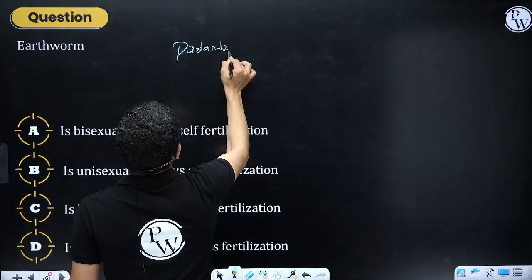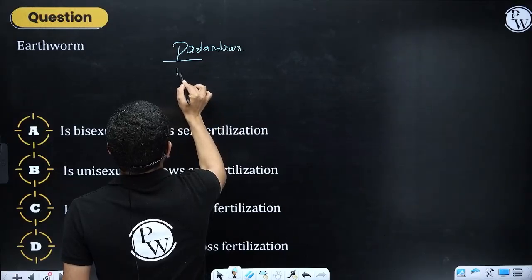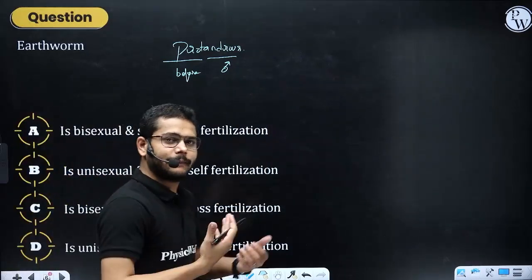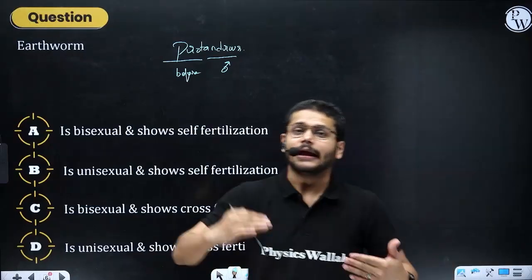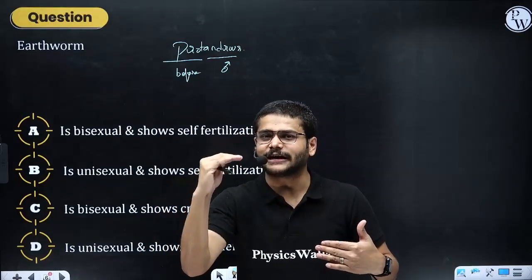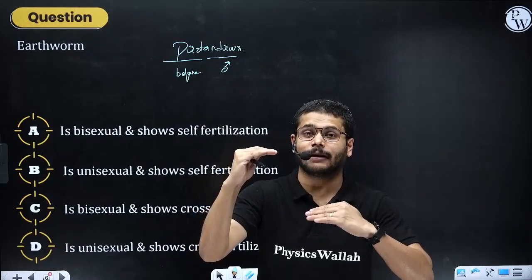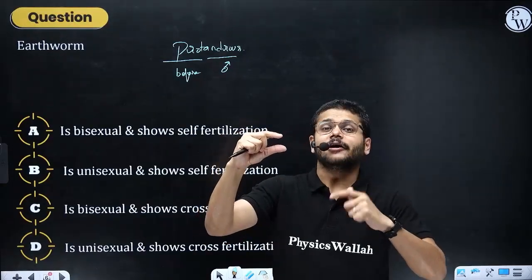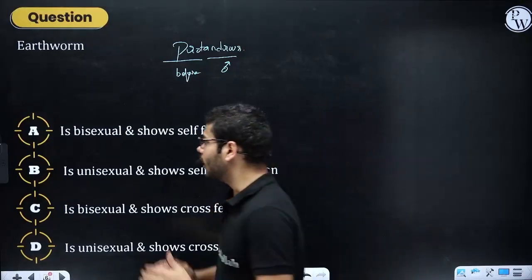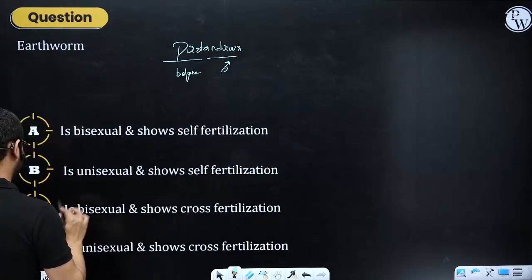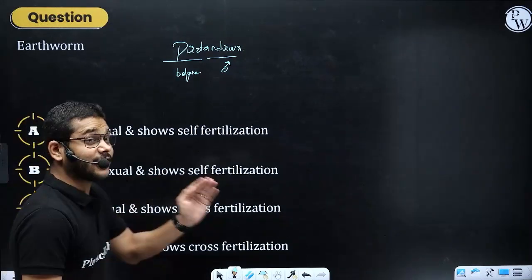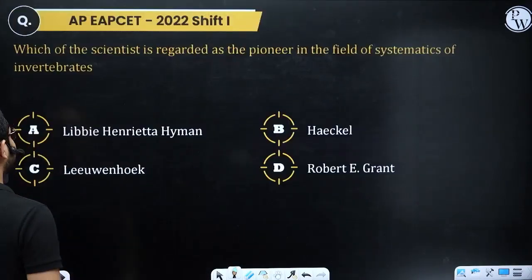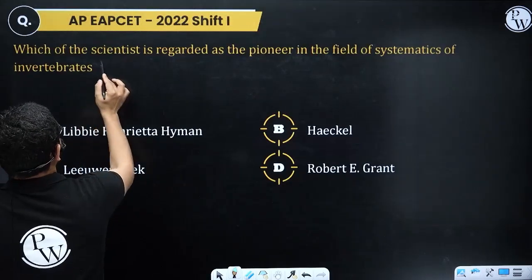By the time the male reproductive system is ready for fertilization, the female system has not yet developed. Later when the female system matures and produces eggs, the male has matured already. So even though they are bisexual, they undergo cross-fertilization because they are protandrous.